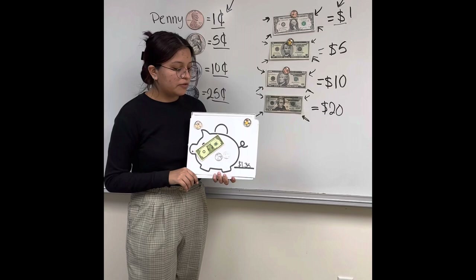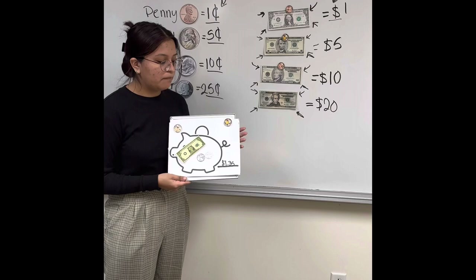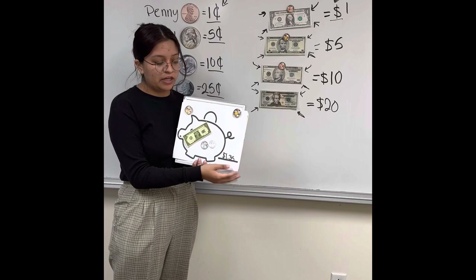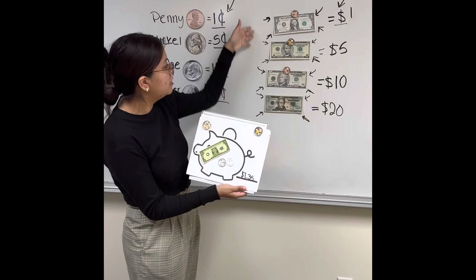So now with a partner, you're going to be doing the same thing that we did together as a class. I'm going to give you a blank piece with a piggy bank, and here you're going to write down the value you'd like to put. I'm going to pass around cutouts of each of every single one — coins and bills — and with your partner, you're going to figure out what bills and coins you need for this activity.